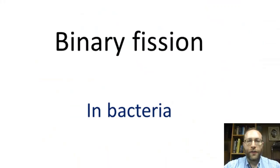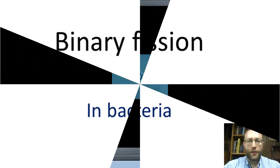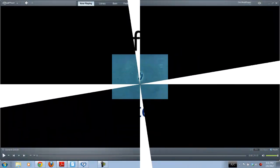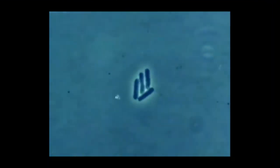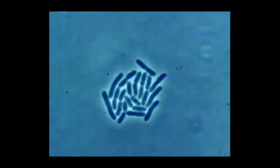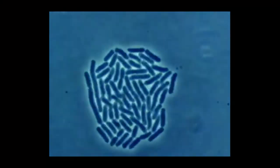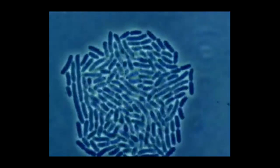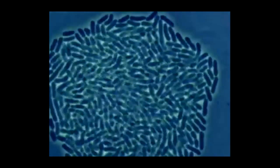Here's the first example of binary fission, and this is in a prokaryote — in bacteria. Prokaryotes, if you remember, are organisms which don't have a nucleus. Bacteria reproduce very simply and rapidly by doubling their contents and splitting in two. Just one bacterium dividing every 20 minutes could produce nearly 5,000,000,000,000,000 bacteria in one day.